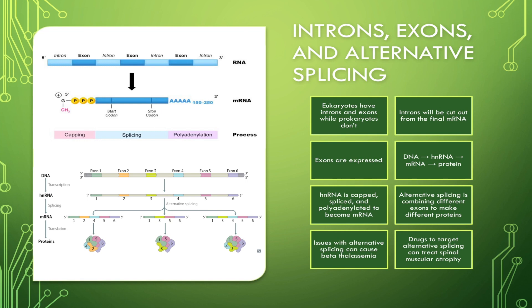Before we begin, let's remind ourselves that eukaryotic DNA has introns and exons, while prokaryotes don't have introns and exons.